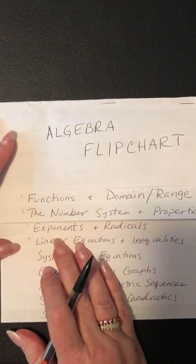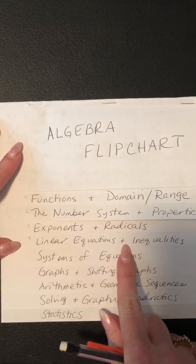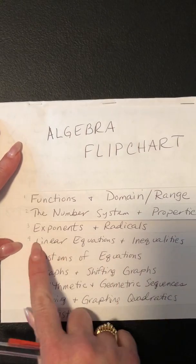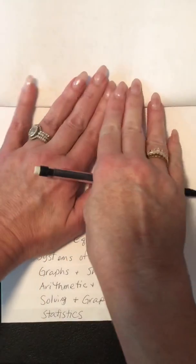Hi, welcome to part 4 of the Algebra Flipchart, and this one's called Linear Equations and Inequalities. Remember, linear - the first four letters of that is line, so that's really what we're talking about is linear equations.